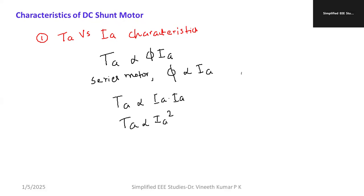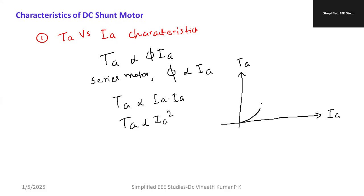Now you can draw the characteristics. On the y-axis mark the armature torque, and on the x-axis mark the armature current. The shape of this graph is just like a parabolic graph.